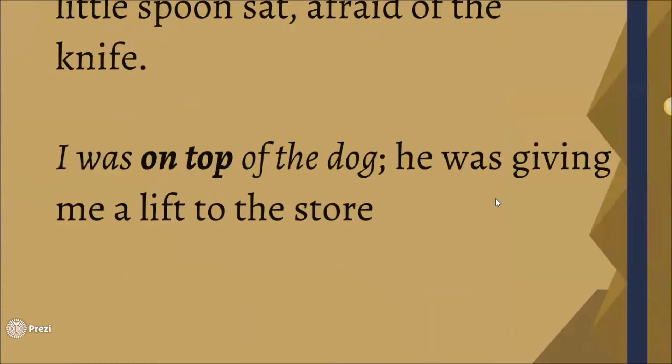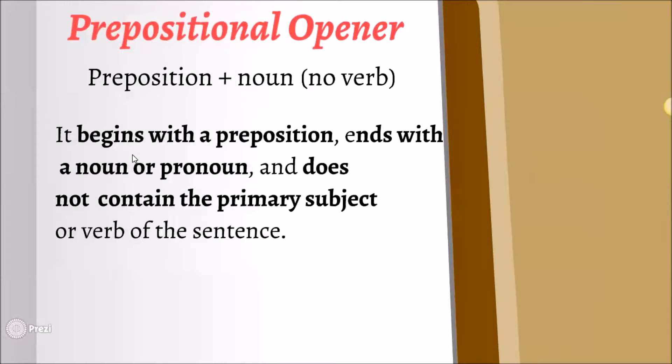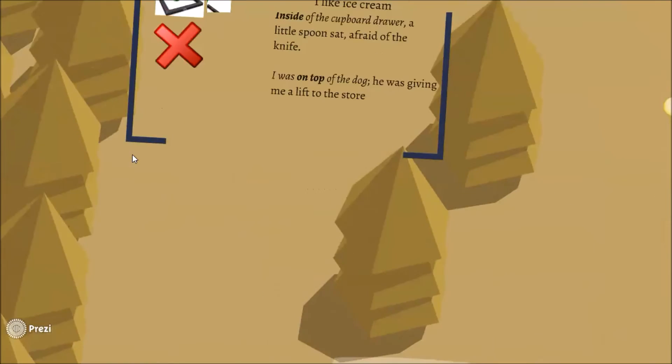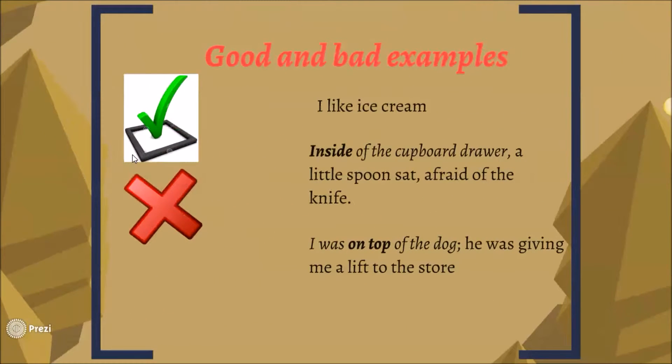I was on top of the dog who was giving me a lift to the store. On top is the preposition there, but it's not the very first word. And it ends with a noun or pronoun, but it does contain the primary subject. So that is an incorrect example as well. So that's a prepositional opener.